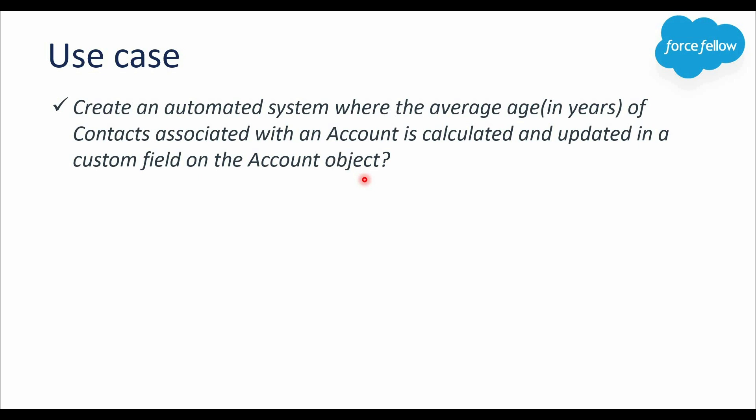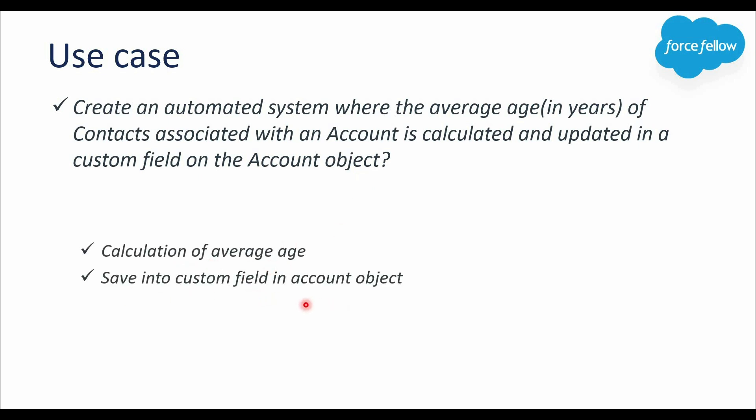Now let's discuss the solution approach. If we break this whole requirement, we have two parts: first is calculation of average age, and second is saving it into a custom field on the Account object. This means we need to create a custom field on Account to store average age. So first let's create that field, then we will move further.